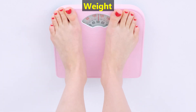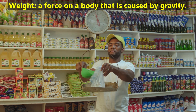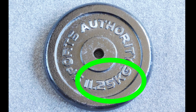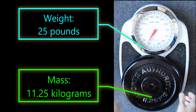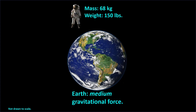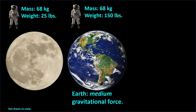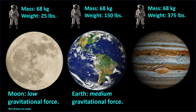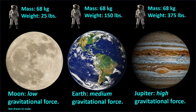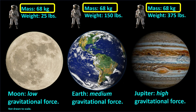Now we're ready to discuss weight. The word weight refers to a force on a body that is caused by gravity. This plate has a mass of 11.25 kilograms. The scale says the plate weighs 25 pounds. On Earth, this astronaut weighs 150 pounds. On the Moon, his weight drops to only 25 pounds, because the Moon's gravitational force is much less than the Earth's. On Jupiter, he would weigh 375 pounds, because Jupiter's gravitational force is much greater than the Earth's. Please note that in all three places, his mass is the same, because his amount of matter stays the same.